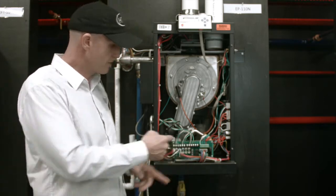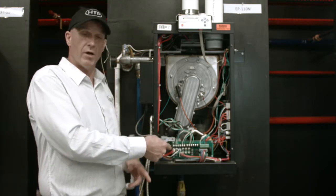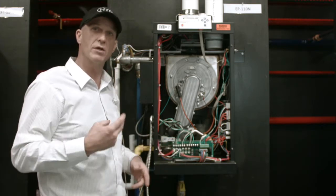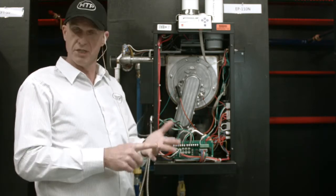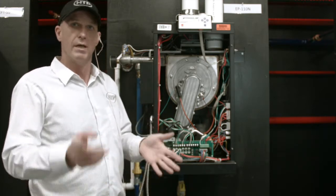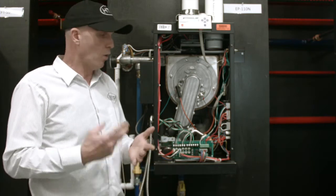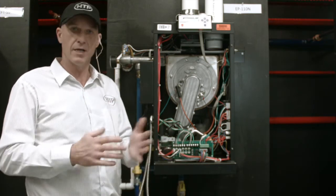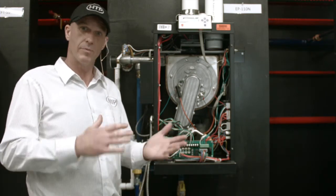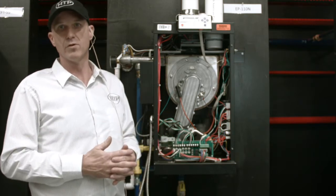It also provides the line voltage output. So we have our 120-volt line voltage in and we can control three different pumps: a system pump, a boiler pump, as well as a DHW pump. Or we can have some of those pumps run at the same time. If we need the DHW pump and the boiler pump, we can configure it to run both of those at the same time.